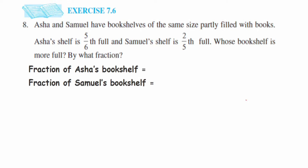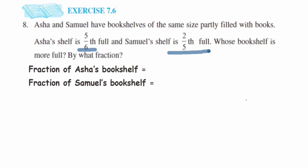Here's question 8 from exercise 7.6 of the fractions chapter. The question is: Asha and Samuel have a bookshelf of the same size, partly filled with books. Asha's shelf is five-sixth full and Samuel's shelf is two-fifth full. Whose bookshelf is more full, and by what fraction? They have given two fractions and are talking about two people — Asha and Samuel.